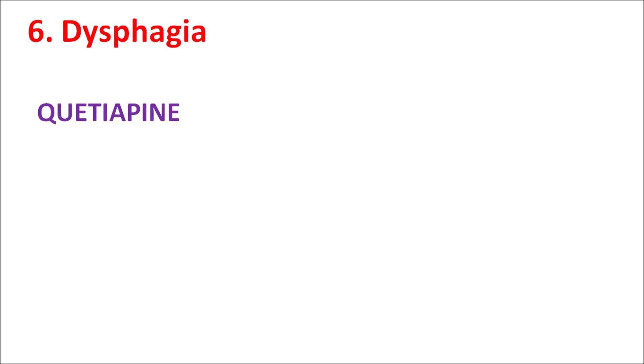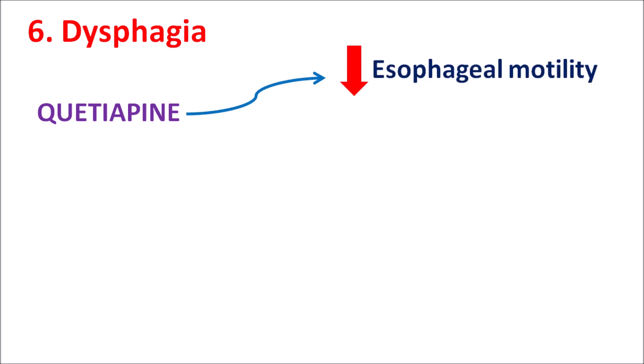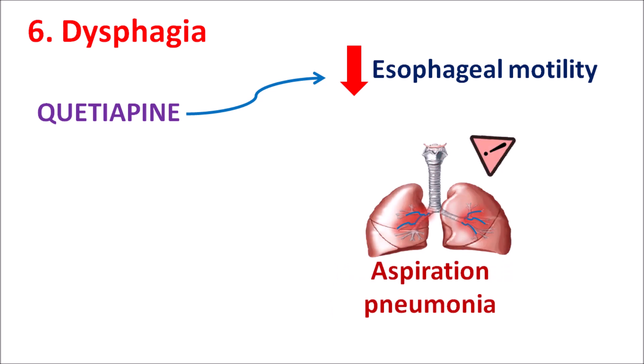The sixth precaution is dysphagia. Quetiapine can produce difficulty in swallowing because this drug can reduce the motility of the esophagus. Because of reduced esophageal motility, the patient may feel difficulty in swallowing, which may increase food aspiration. So Quetiapine should be carefully given to patients with aspiration pneumonia.